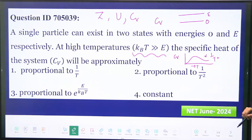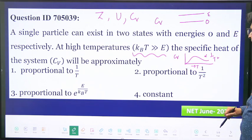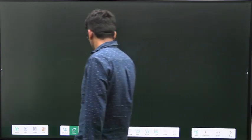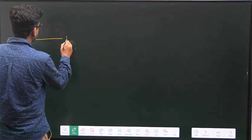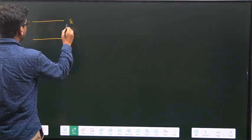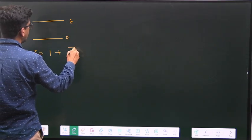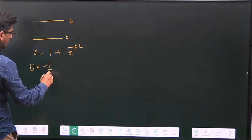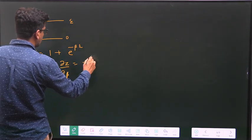Just take a two level system: zero and E. What will be the partition function? Z = 1 + e^(-βE). What will be the average energy? It is -1/Z dZ/dβ, which will be equal to -1/(1 + e^(-βE))